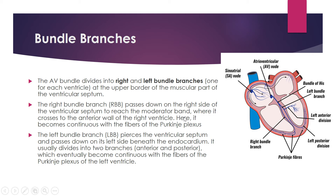The right bundle branch passes down on the right side of the ventricular septum to reach the moderator band — a trabecula carnea that crosses the anterior wall of the right ventricle — and becomes continuous with the Purkinje plexus fibers. The left bundle branch pierces the ventricular septum and passes down on the left side beneath the endocardium, usually dividing into an anterior branch and a posterior branch, which eventually become continuous with the Purkinje plexus of the left ventricle.